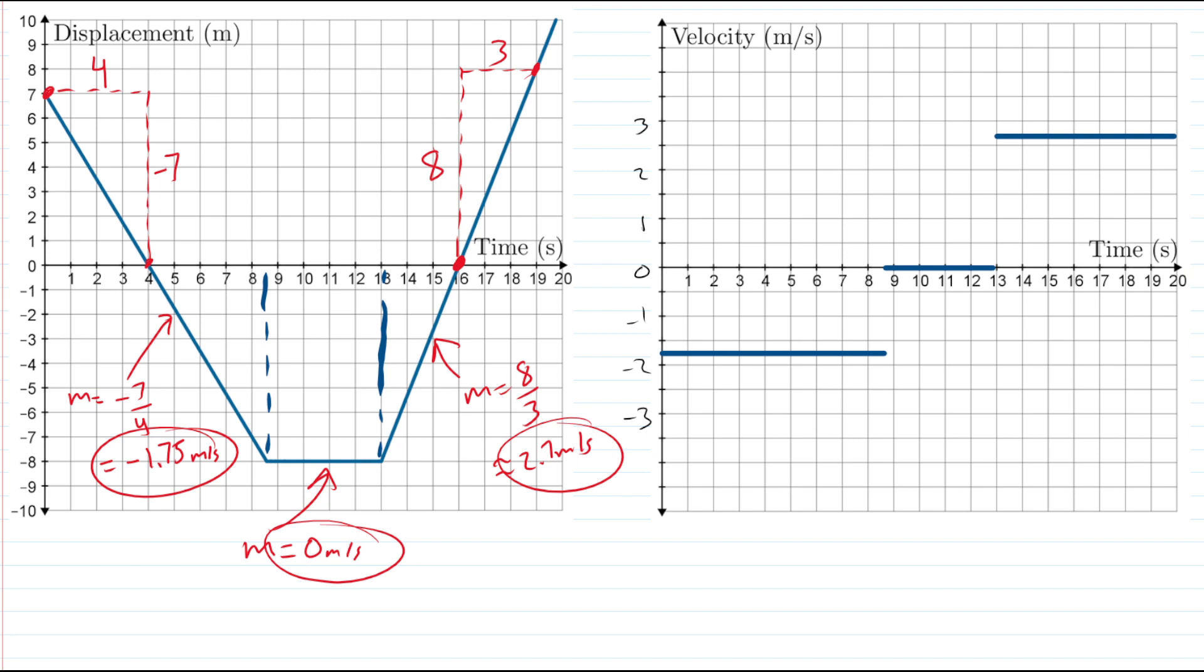But we should talk about whether or not this is actually realistic. If we look at our velocity-time graph, notice that we have some sharp corners here, which implies that we went from one velocity, in particular, negative 1.75, to another velocity, zero meters per second, in an instant. Now think about that. Is it possible to go from one velocity, or one speed, to another instantaneously? And the answer is, well, no, not really. We'd actually have to slow down. And the same thing happens right here. Going from zero meters per second to 2.7 meters per second in an instant is actually not really possible.